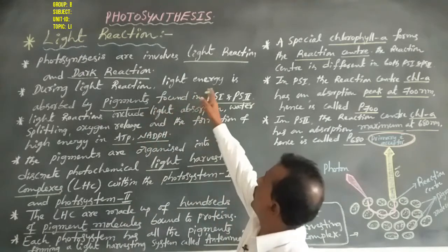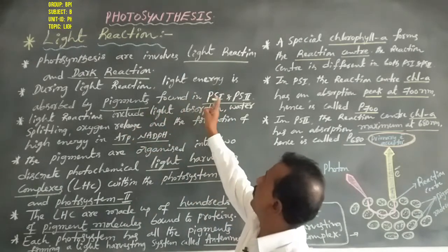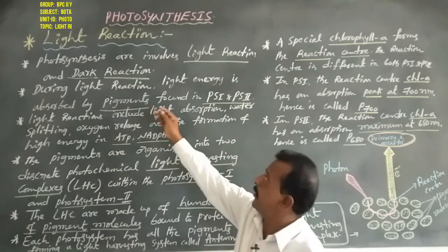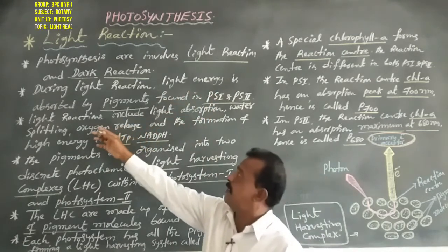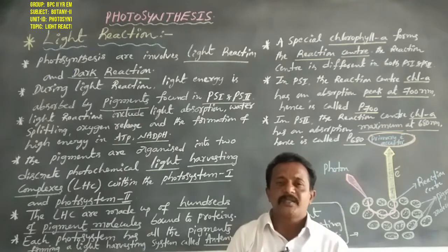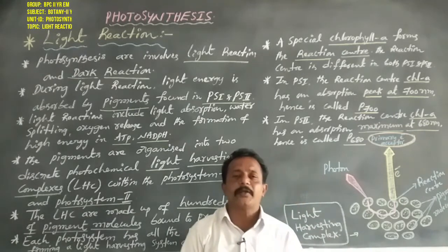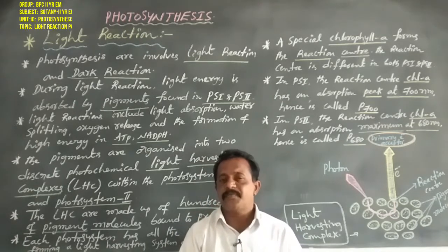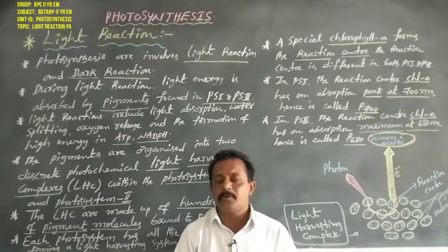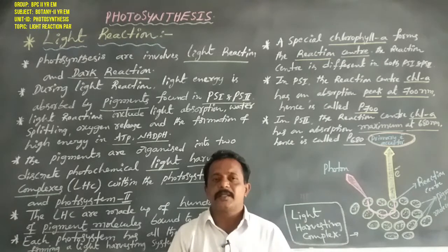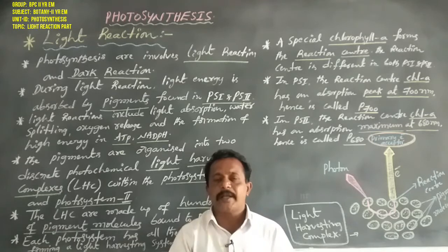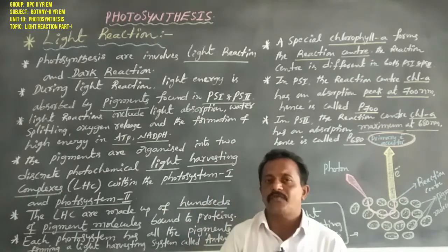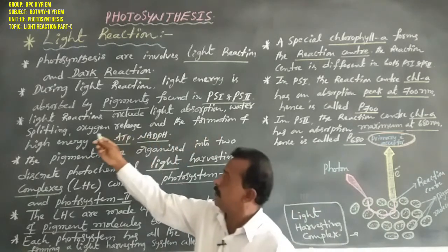During light reactions, light energy is absorbed by pigments found in photosystem 1 and photosystem 2. Light energy is easily absorbed by pigments such as chlorophylls and carotenoids found in PS1 and PS2, that is photosystem 1 and photosystem 2.